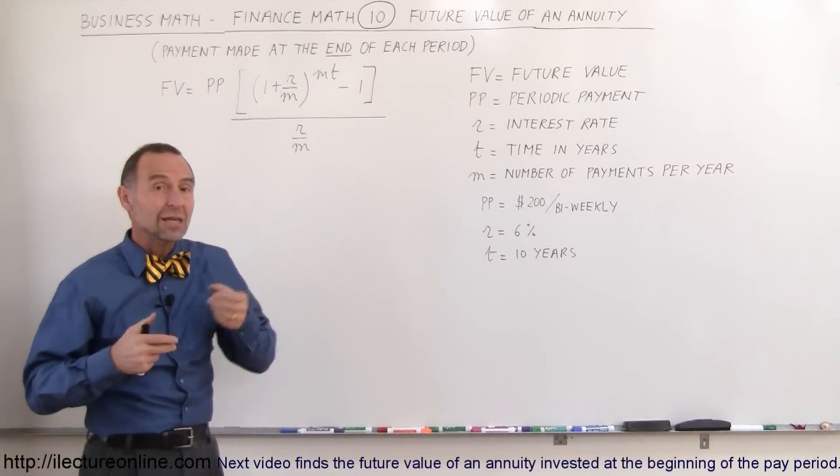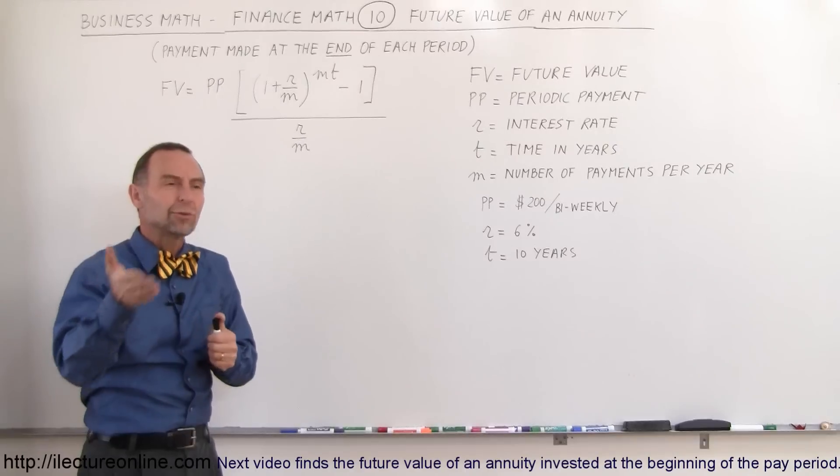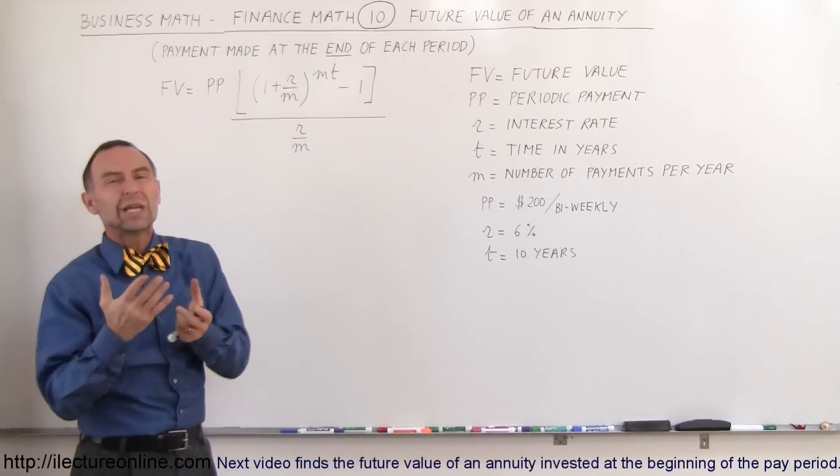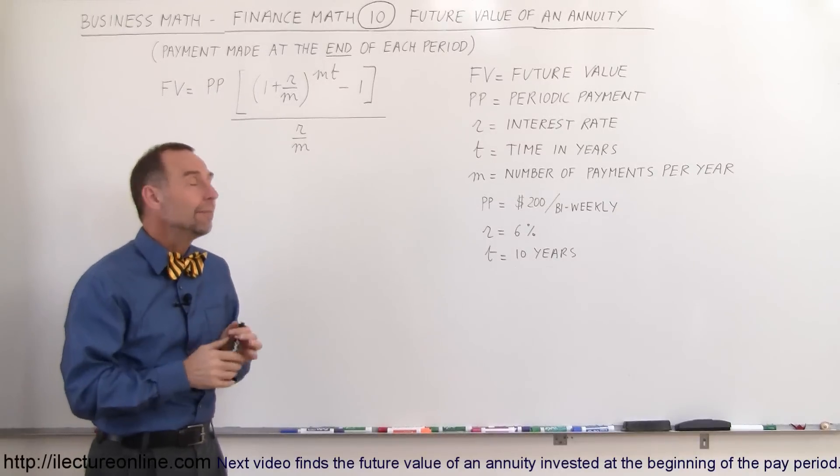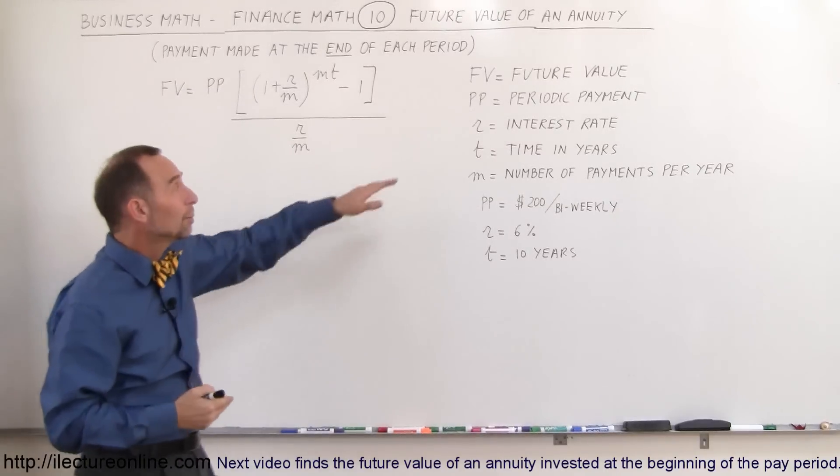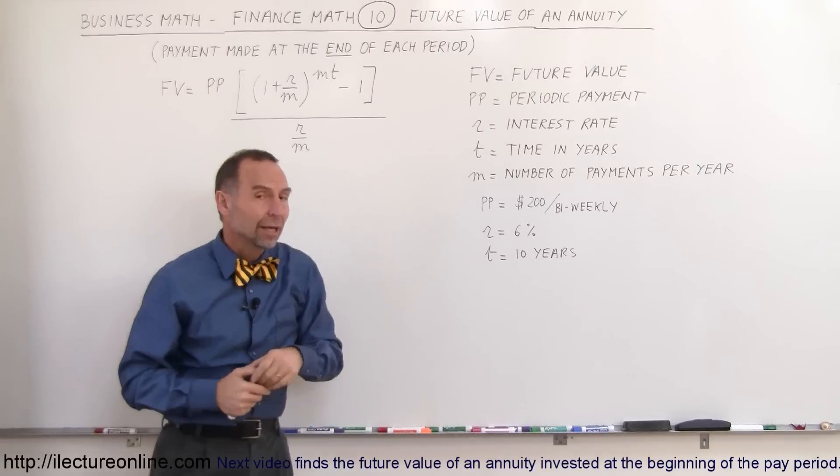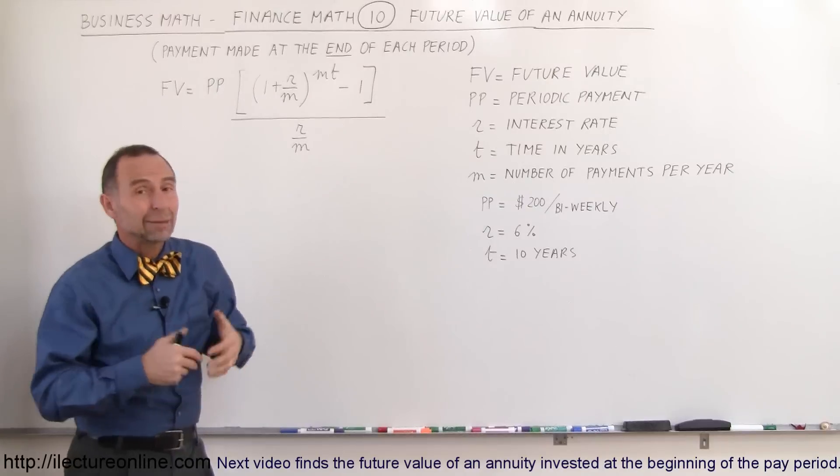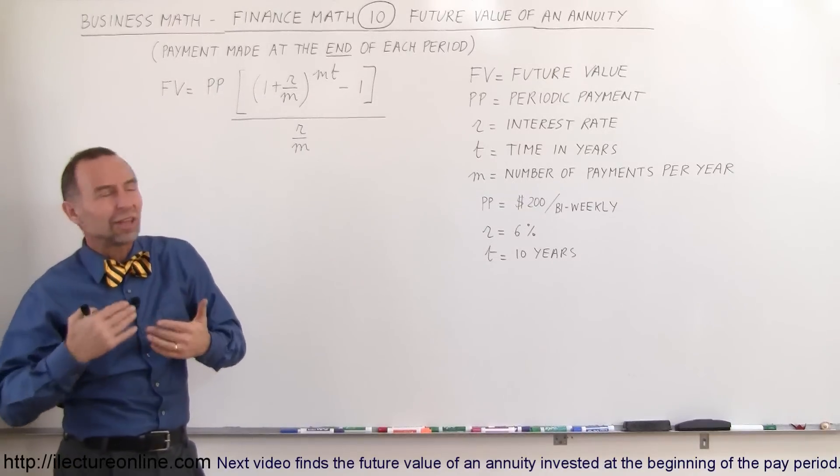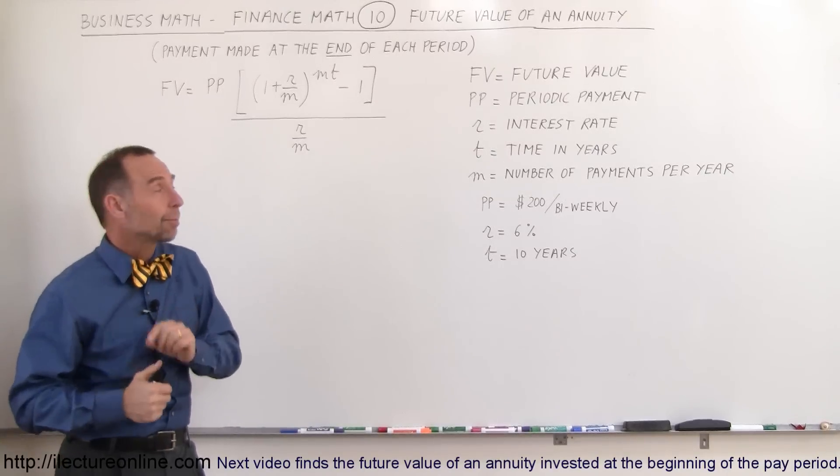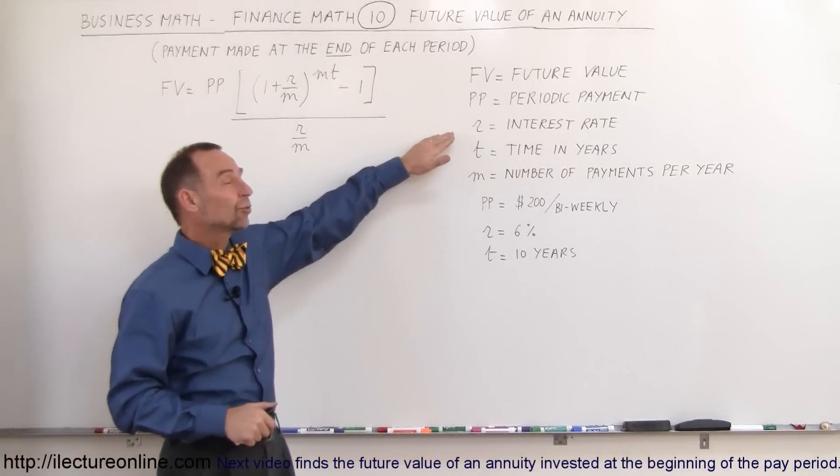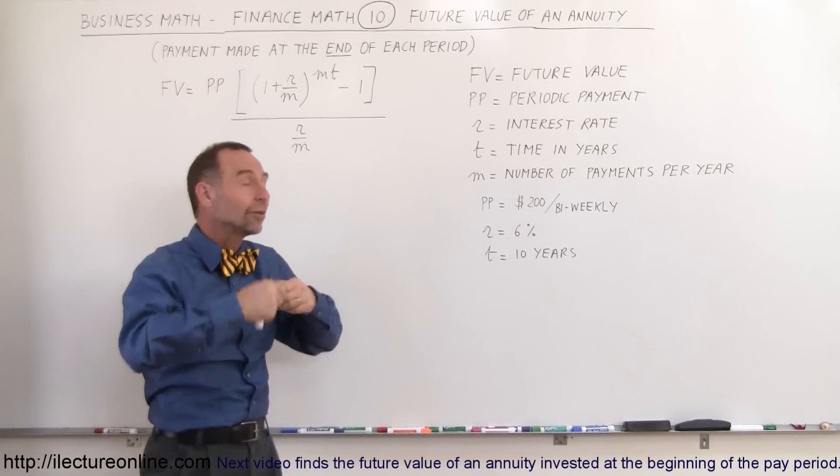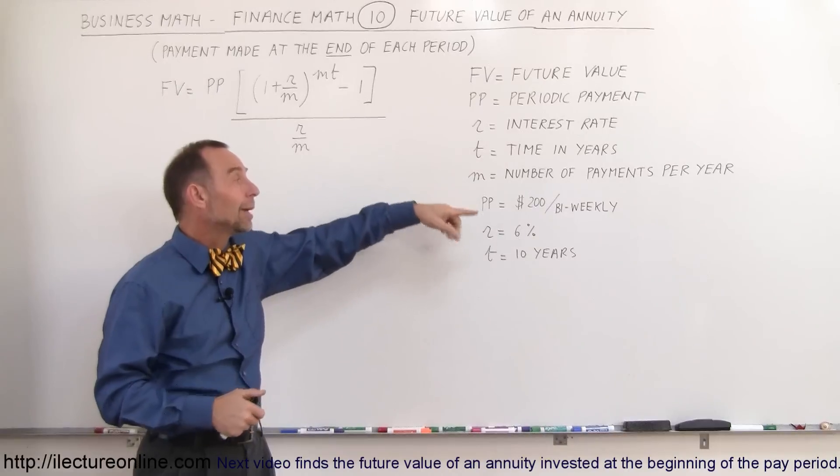Periodic payment is the payments that we make to ourselves in our own account, and since sometimes we do it weekly, if we get paid weekly, typically the payment comes out of our paycheck directly, and if we get paid weekly, then there would be 52 payments per year, periodic payments. If we get paid bi-weekly, there would be 26 periodic payments per year. If we get paid monthly, there would be 12. So that's why we call it periodic payment, because we don't always know what the period is. R is the interest rate. T is the time in years that we allow this to go on. M is the number of payments per year.